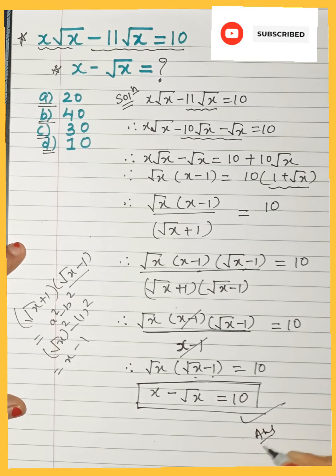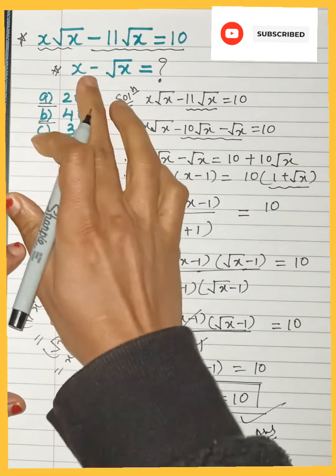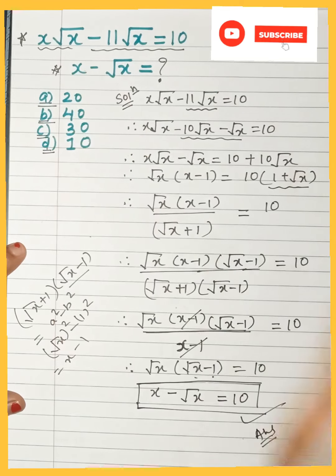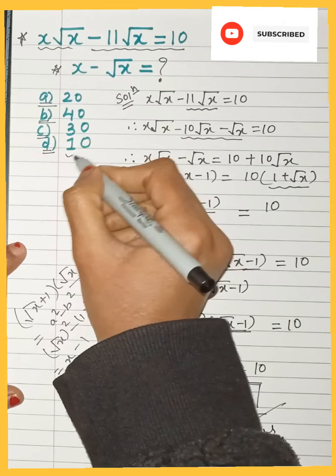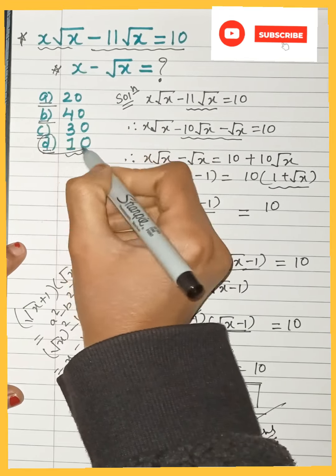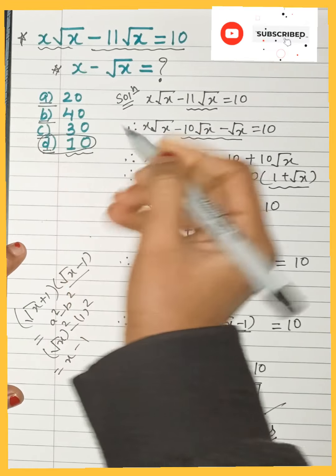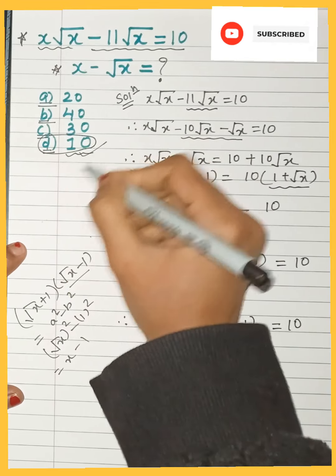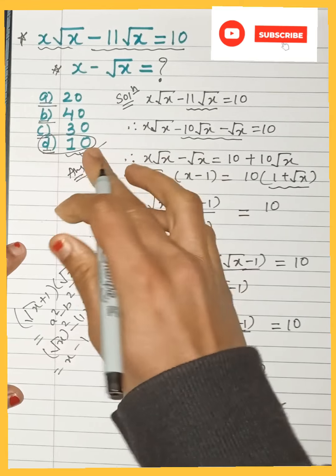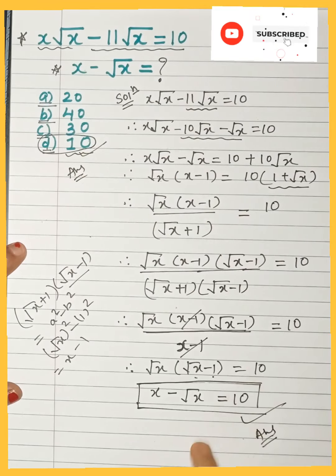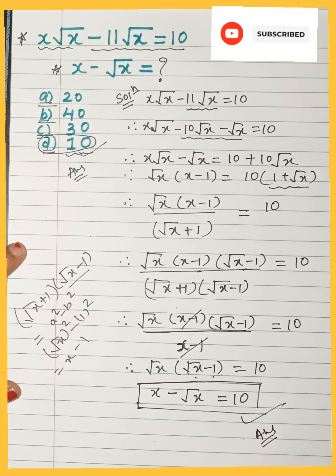So x − √x = 10, which is what we needed to find. Option D is the correct answer. This is how you solve this type of question. I hope you understood.